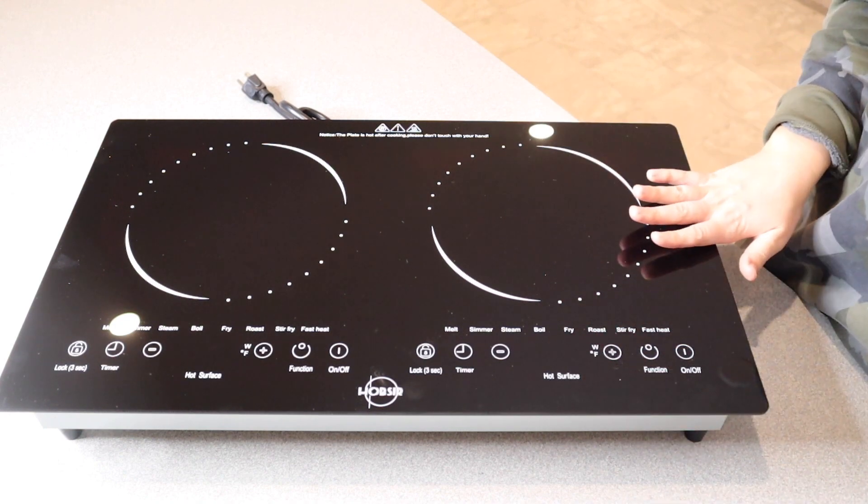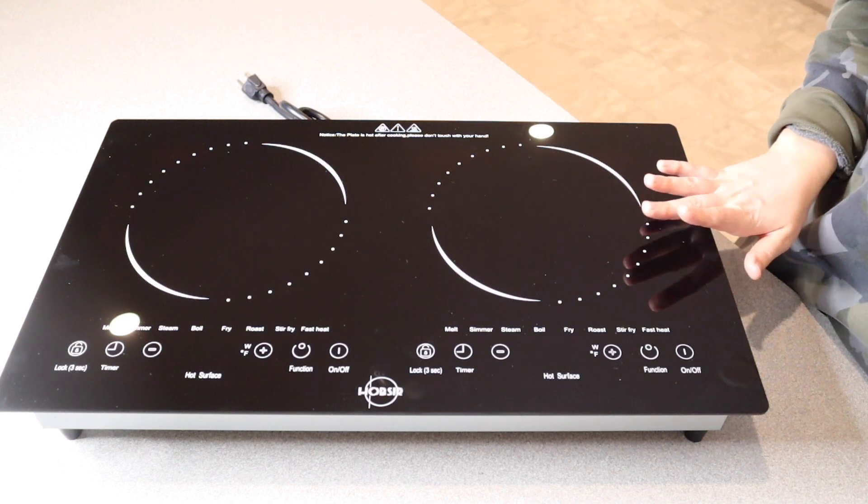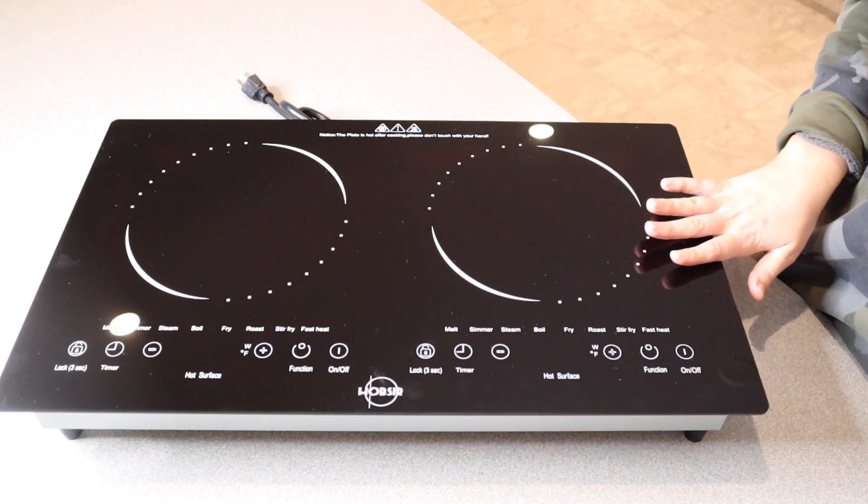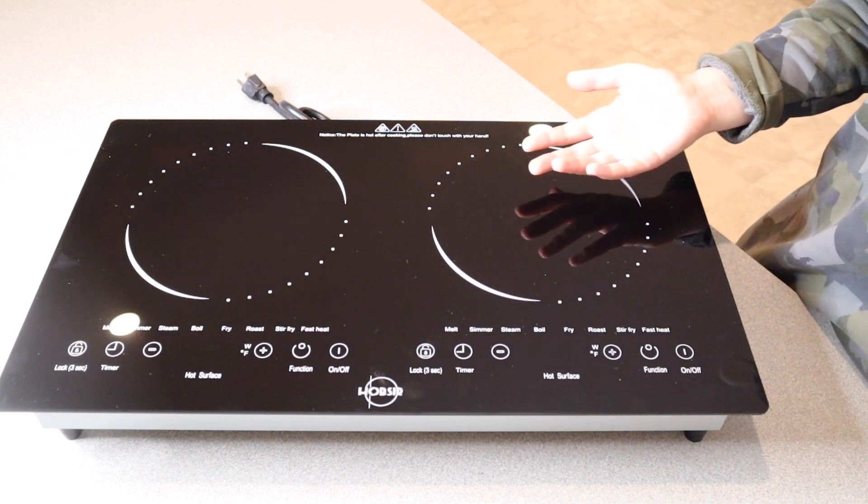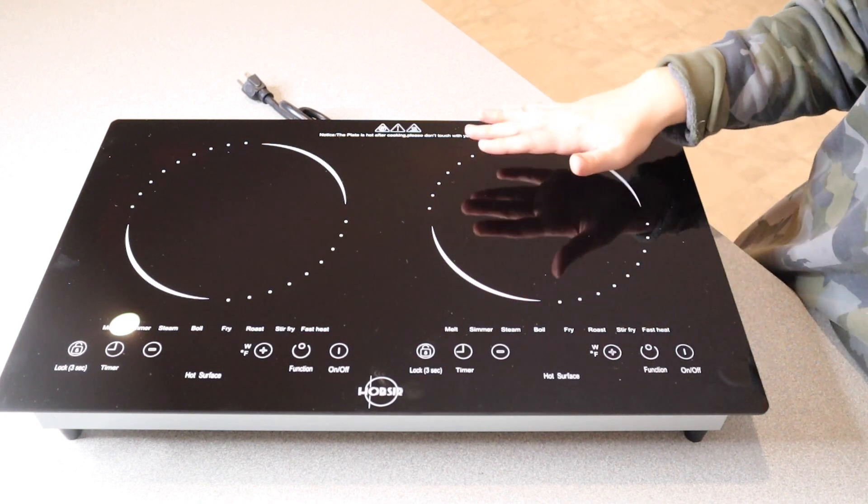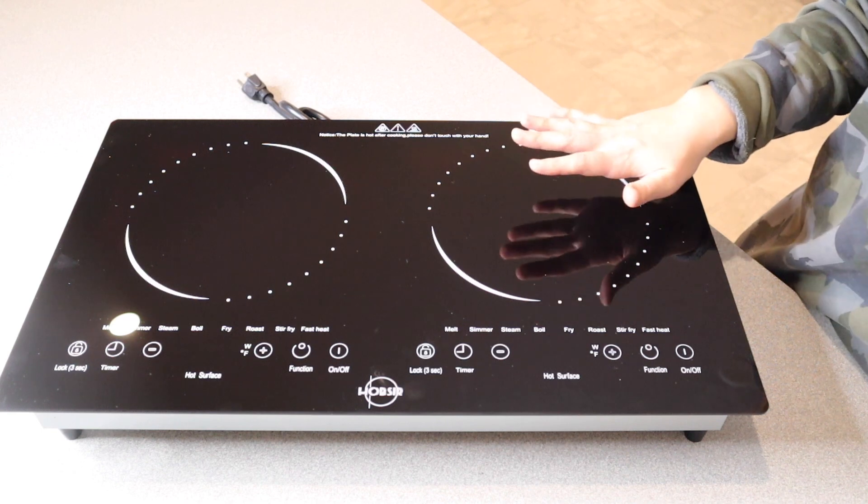For example, you can use cast iron cookware, aluminum cookware, stainless steel cookware, copper. You can even use concave base cookware, which usually cooktops like this you have to have a flat base bottom, and this one you don't even need to do that.